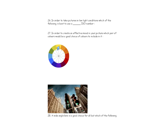Color contrast in photography means choosing two colors that are opposite each other on the color wheel. For example, yellow and purple are across from one another, as are blue and orange. Choosing two colors from opposite sides of the color wheel produces strong color contrast in your image.